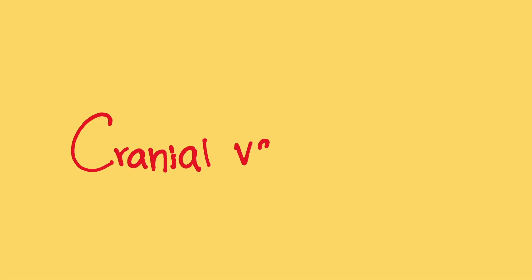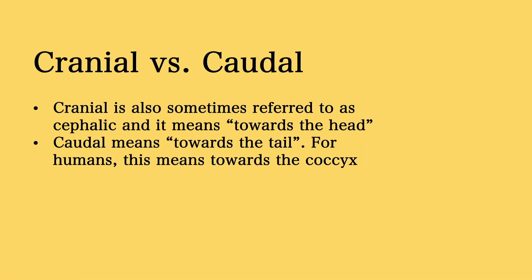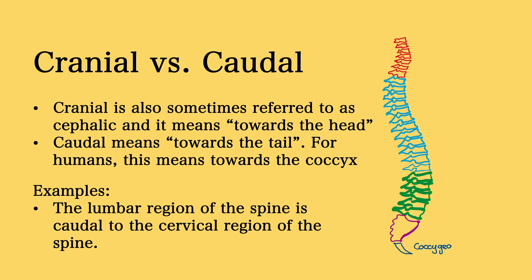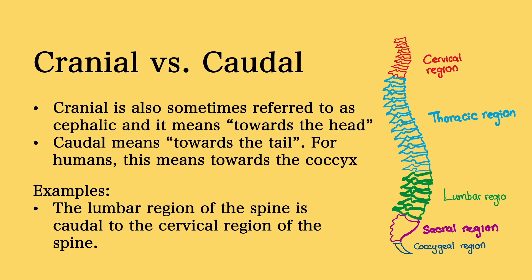Then we have cranial and caudal. Cranial, also sometimes referred to as cephalic, means towards the head. Caudal means towards the tail — for humans, this means towards the coccyx. An example is that the lumbar region of the spine is caudal to the cervical region of the spine, meaning the lumbar region is closer to the coccyx than the cervical region.